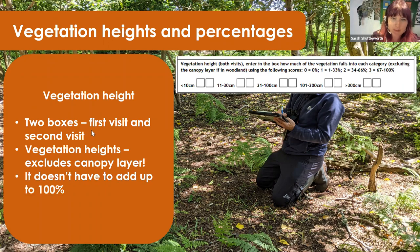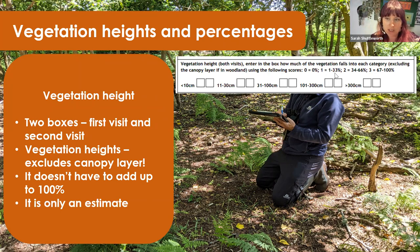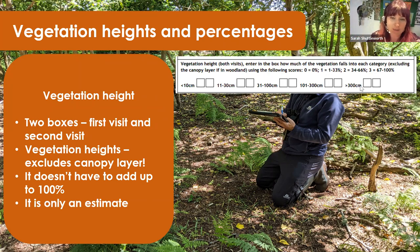Remember it doesn't have to add up to 100 because all these things are growing in different layers. It's only an estimate — that's why the brackets show quite broad ranges like 1 to 33. It doesn't matter if you think you might get it wrong; it's just a best guess.